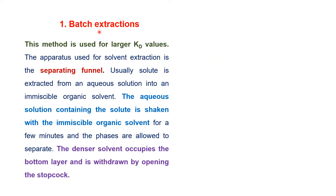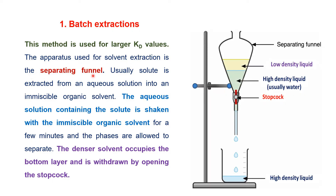The first method is batch extraction. This method is used for larger distribution coefficient values. The apparatus used for solvent extraction is a separating funnel. Usually, the solute is extracted from an aqueous solution into an immiscible organic solvent. The aqueous solution containing the solute is shaken with the immiscible organic solvent.